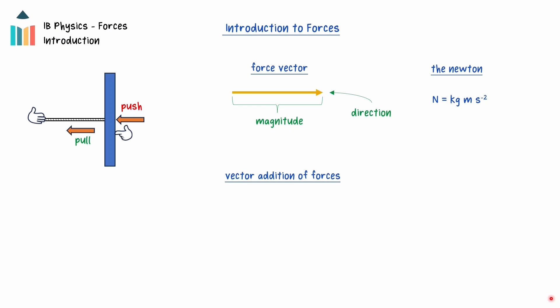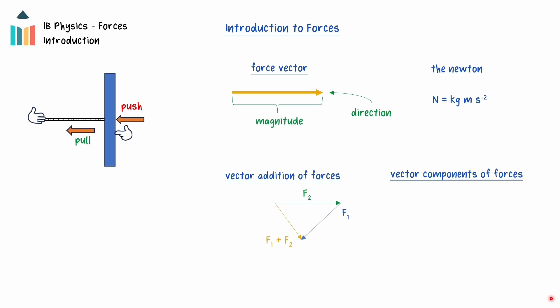Because forces are vectors, when multiple forces act on the same object, they can be added either through the vector operation of head-to-tail vector addition or by taking horizontal and vertical components of the vector. Often, many forces are acting on an object simultaneously and they will need to be added to find the net force, or components taken to determine the motion of the object.